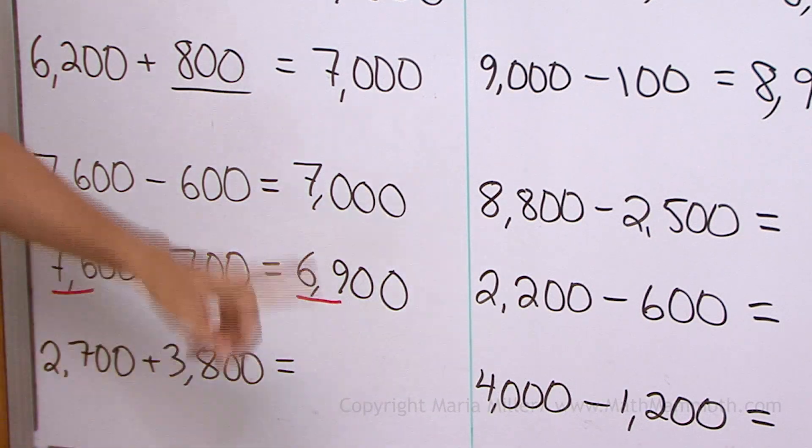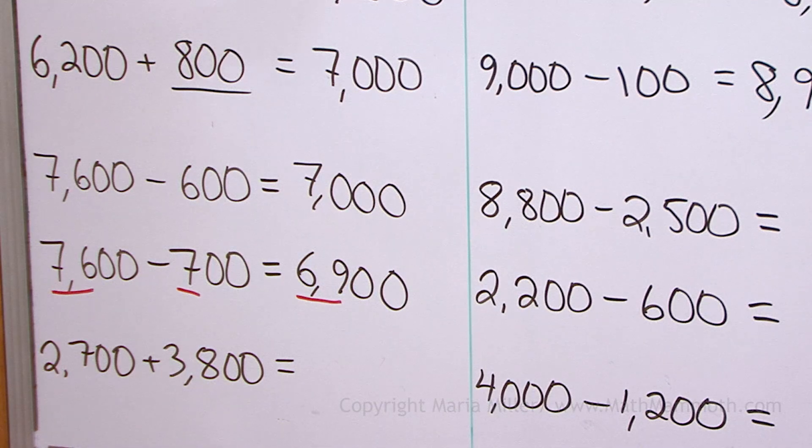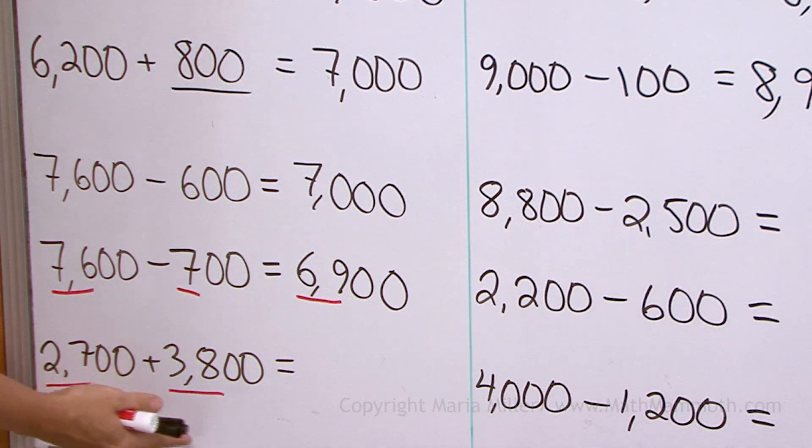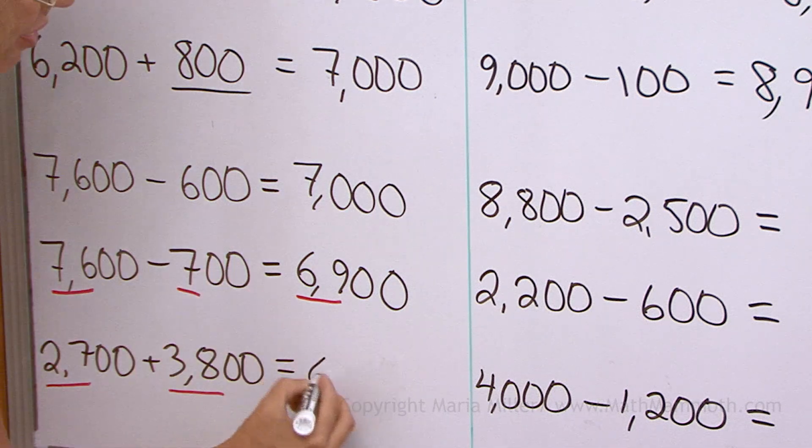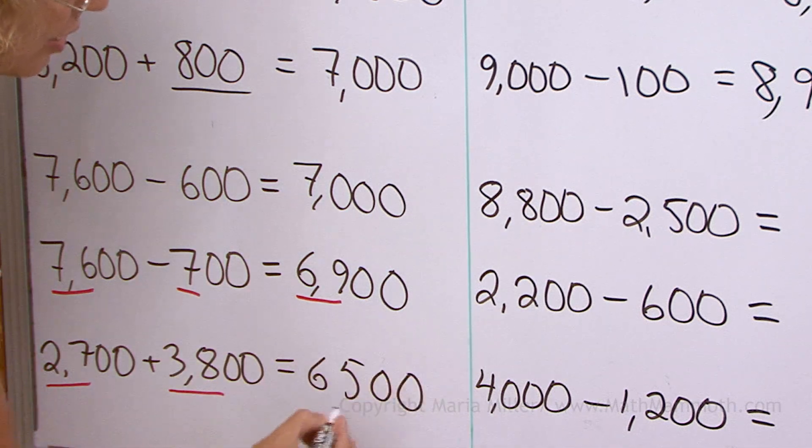2700 plus 3800. Again, you can think of those whole hundreds. You can think of 27 plus 38. That would be... There's 50. Then 15. We get 65, right? So the answer would be 65 hundreds. 6500.